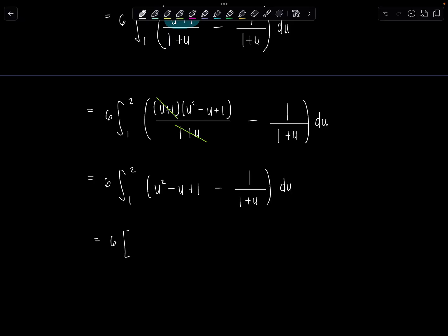So we've got 6 times, antiderivative is going to be 1/3 u cubed minus 1/2 u squared plus u minus ln absolute value 1 plus u. And then this gets evaluated from 1 to 2.